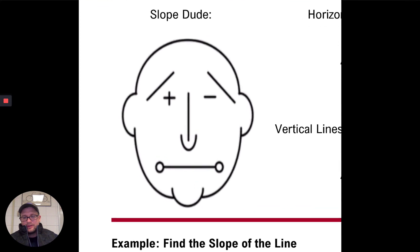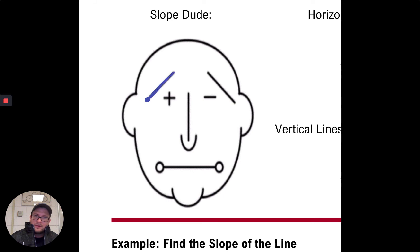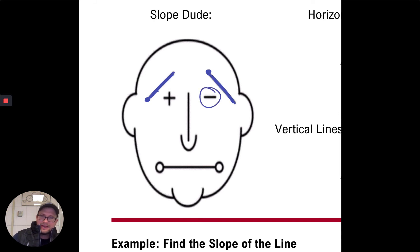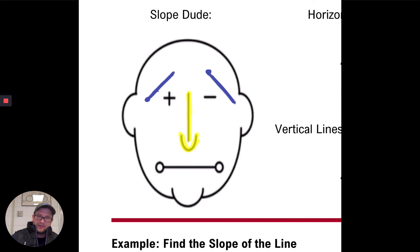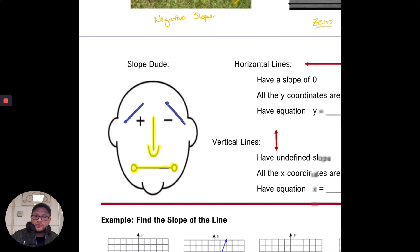A quick way to remember slope is 'slope dude.' On his face you can see all four slopes. His first eyebrow goes up — positive slope. His other eyebrow goes down from left to right — negative slope. His nose is vertical, straight up and down — undefined slope. And his mouth is flat all the way across, no rise and no run — zero slope. Slope dude is a good way to help you remember what's going on with slope.